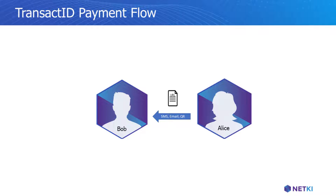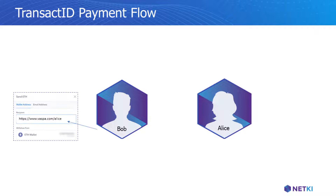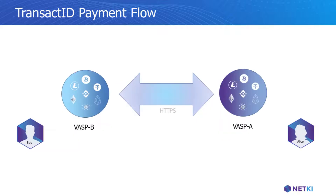Rather than entering Alice's wallet address in the send field, Bob simply copies and pastes the URL Alice shared. Bob's VASP, VASP B, opens a private, secure, encrypted connection to VASP A, Alice's VASP.